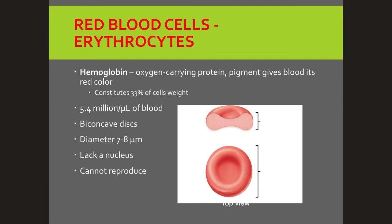Let's dive right into red blood cells, which are also called erythrocytes. Red blood cells are found in the blood and are the most numerous of all the blood cells. Erythrocytes have hemoglobin — a protein found in red blood cells that allows them to carry oxygen. It is also a pigment which gives red blood cells their red color. Hemoglobin makes up about 33% of the red blood cells' weight. There are about 5.4 million red blood cells per microliter of blood.